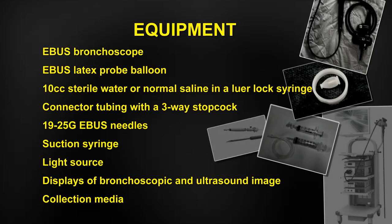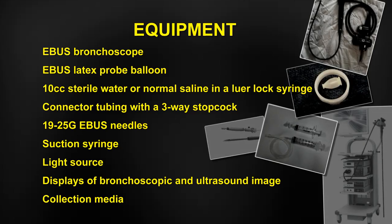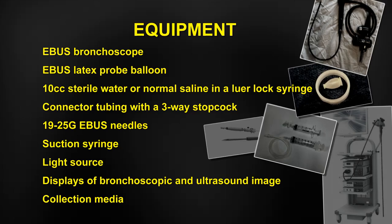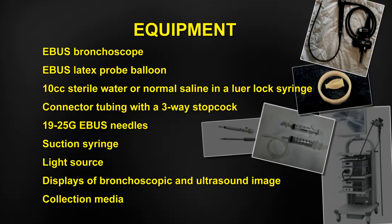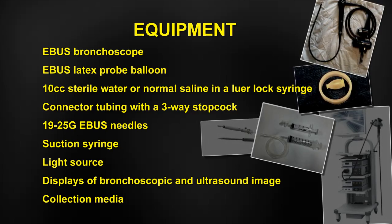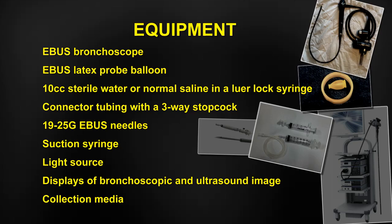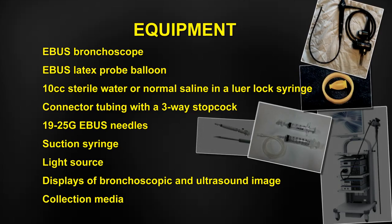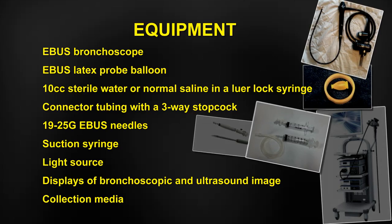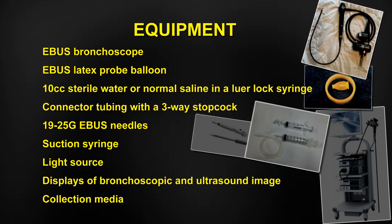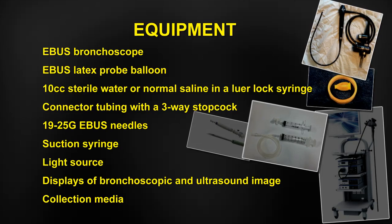Required equipment for endobronchial ultrasound includes the EBUS bronchoscope, of which there are currently three available manufacturers: Olympus, Pentax, and Fujifilm. The degree of view ranges from 10 to 45 degrees depending on the model. Other required equipment includes the EBUS latex probe balloon, 10 cc's of sterile water or normal saline in a luer-lock syringe, connector tubing with a three-way stopcock, tools for biopsy including 19 through 25 gauge EBUS needles and a suction syringe, the EBUS processor with light source and display, and collection media such as Cytorich or RPMI for sample processing.